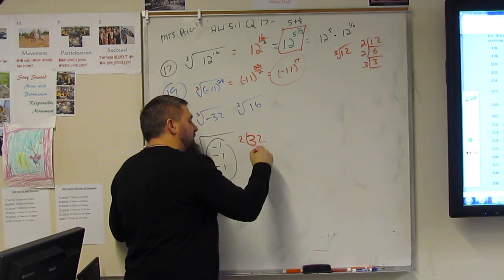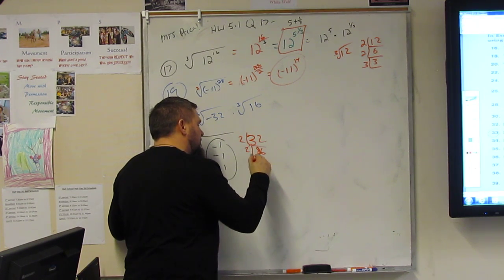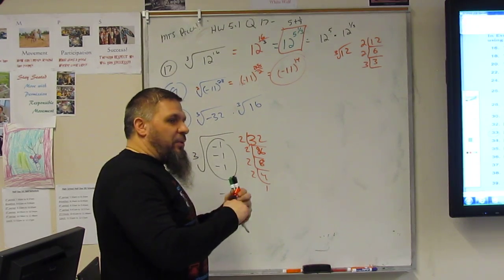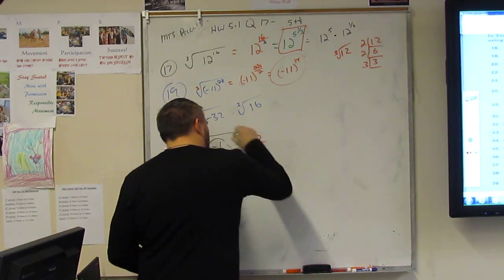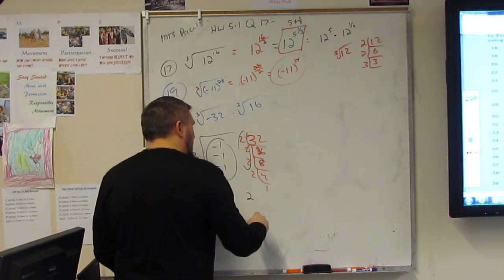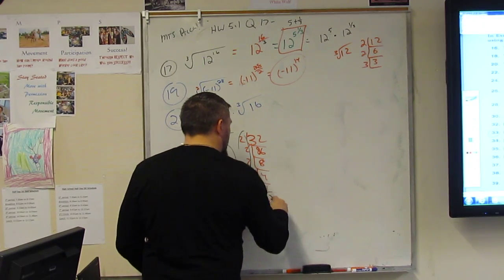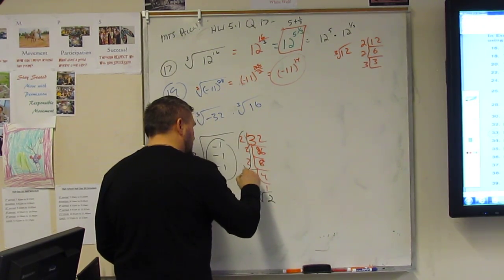Right? So that would be 2, 16. 2, 8. 2, 4. And 2, 1, right? Then we pull out what? Triples, right? So I'm going to pull out a triple, which is a 2 times the cube root of 2, the one that's left.